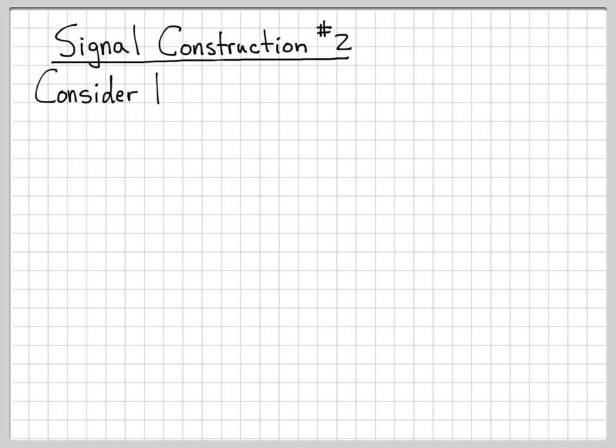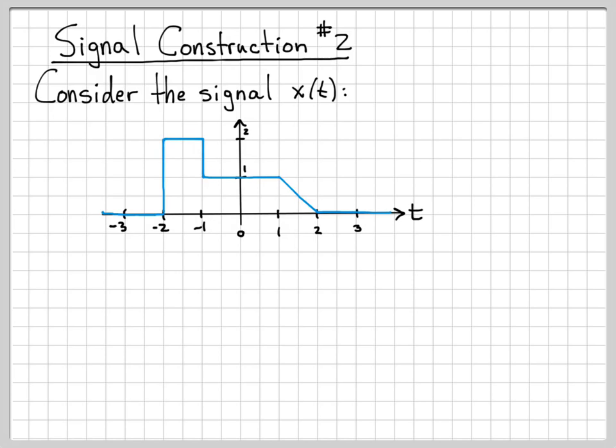All right, signal construction example number two. This is very similar to the last example we worked. We're just going to consider a different signal x(t). So here is the time axis, and I'll go ahead and label my time axis and my amplitude axis. And I'll go ahead and sketch a signal x(t), so that blue curve right there is the signal x(t).